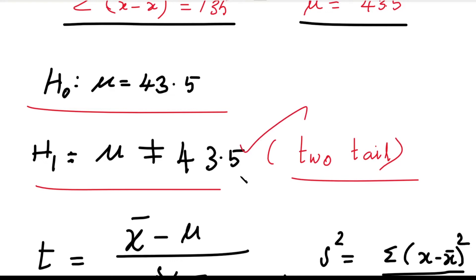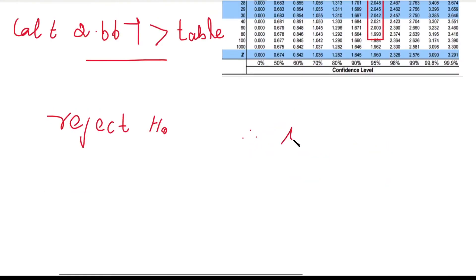H₁: μ ≠ 43.5. This means the population mean value is not reasonable — that is, 43.5 is not correct. Therefore, μ ≠ 43.5.